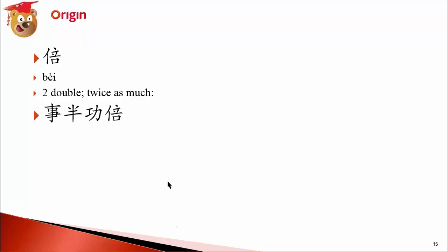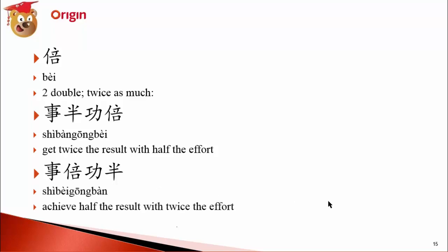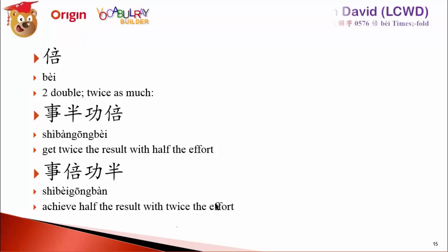事半功倍 (shìbàn gōngbèi) means 'get twice the result with half the effort.' The opposite is 事倍功半 (shìbèi gōngbàn) — achieve half the result with twice the effort. These two phrases have opposite meanings: the effort is doubled but the result is halved. Be careful to distinguish them.